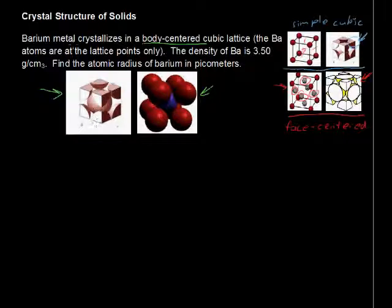Now, we want to find the atomic radius of barium in picometers. So, we are told that it's body-centered. This part, right here, would be the radius. Let's draw it there so you can see it a little better. That part there is the radius, from the center out to the edge.